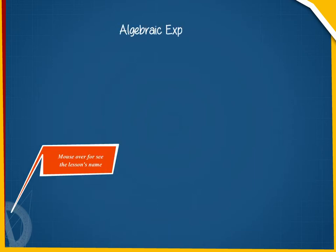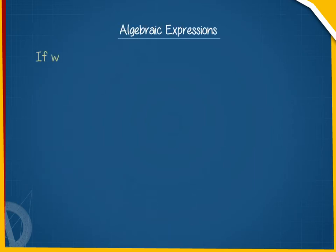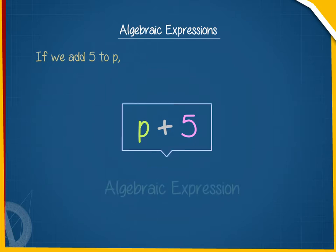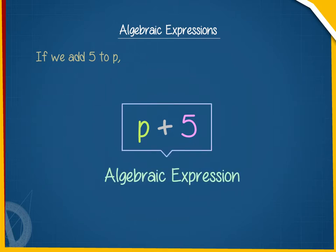Algebraic Expressions. If we add 5 to P, we write the sum as P plus 5. Such an expression is called an algebraic expression.